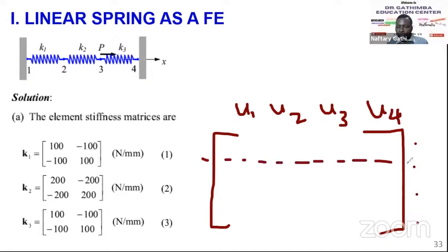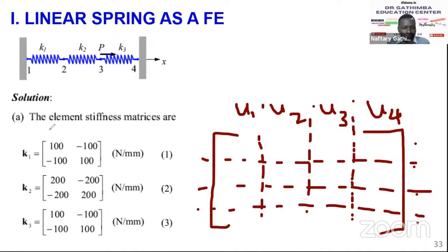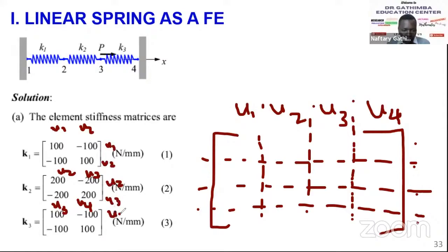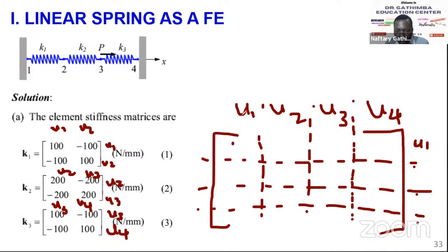You may need a pencil to draw faint guide lines, especially when solving under time pressure. The row and column labels u1, u2, u3, u4 are just guides — they are not part of the matrix itself, so don't make them too prominent. For the cell at position u1-u1, I look at the stiffness matrix K1 and find that the u1-u1 component is 100.